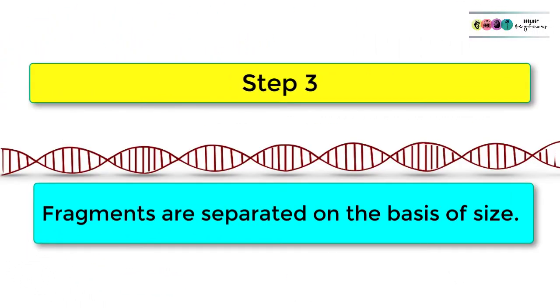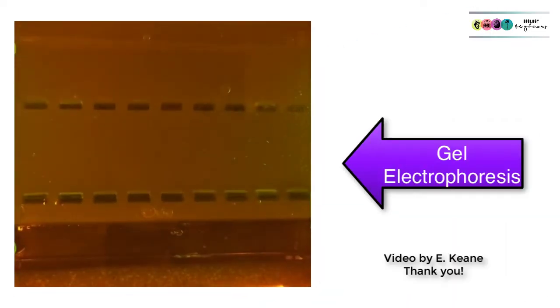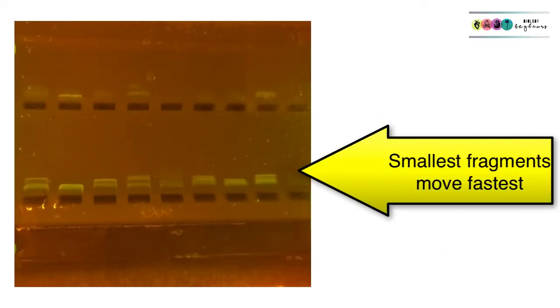Step number three, the fragments are separated on the basis of size, and this usually involves a technique known as gel electrophoresis, where DNA is loaded into this gel and an electric current passes through it. The smallest fragments move fastest through the gel and so get separated out on the basis of size.